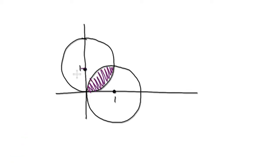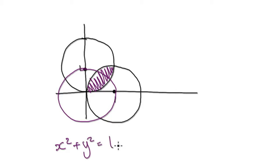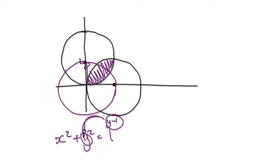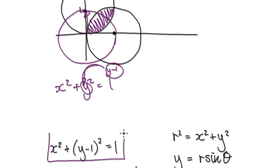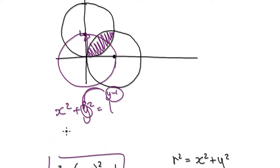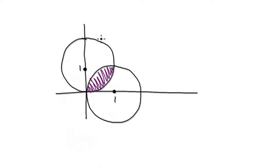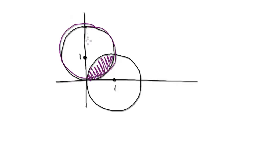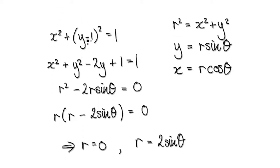To do this, start out with a circle of radius 1. If you want to move it up by 1, then you put y minus 1 into the equation. That will then take you to this position. We are trying to come up with the formula for this circle in polar form. In Cartesian form, that circle is given by this equation.